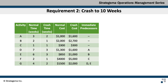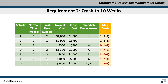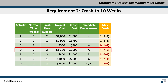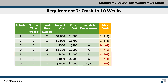Now let's proceed to requirement 2 to crash this project to 10 weeks. First, we calculate the maximum crash time for each activity, which is simply the normal time minus the crash time. For activity A, the maximum crash time is 1 week (3 weeks normal minus 2 weeks crash). Activity B can also be crashed by only 1 week (2 normal minus 1 crash). Activity C cannot be crashed at all since normal and crash times are both 1 week. Activity D can be crashed by a maximum of 4 weeks (7 minus 3). The same methodology gives maximum crash times of 3 weeks for E, 1 week for F, and 2 weeks for G.